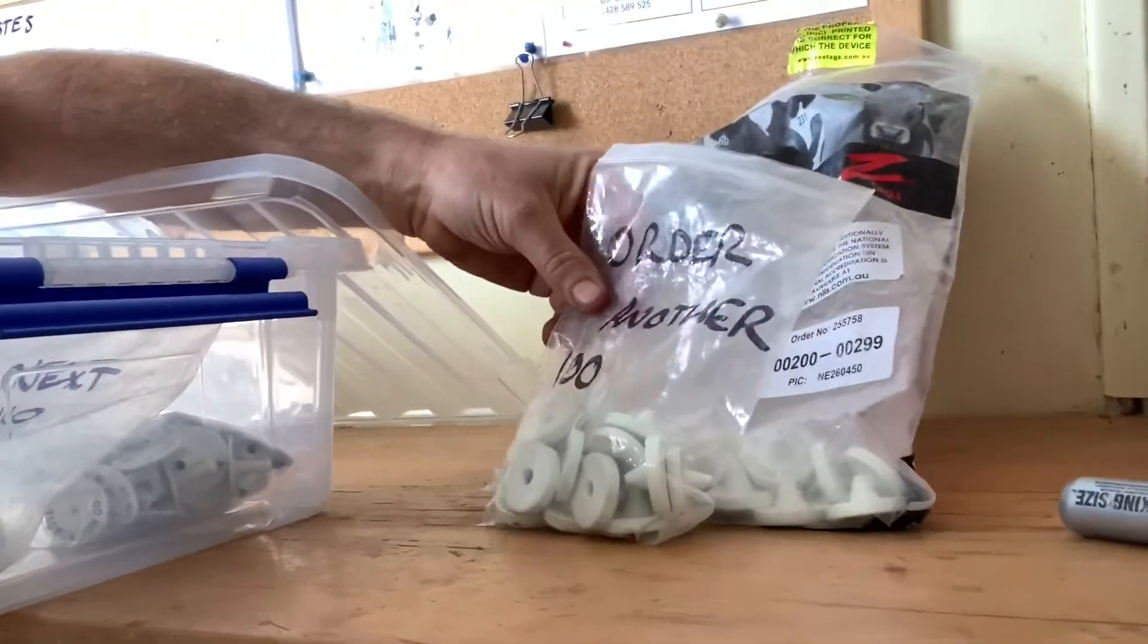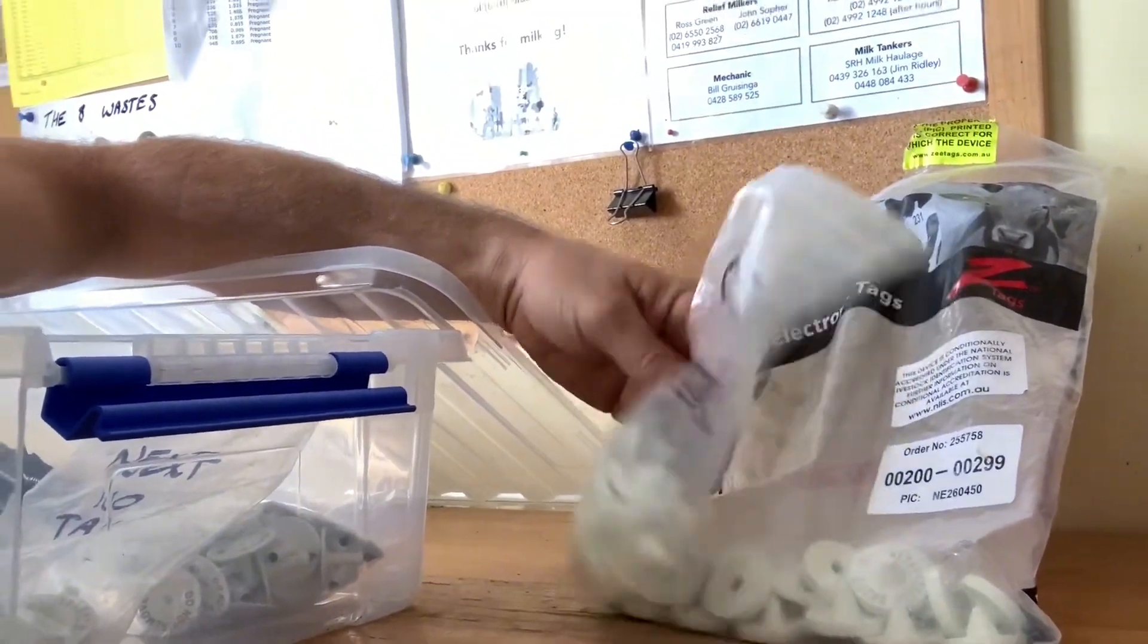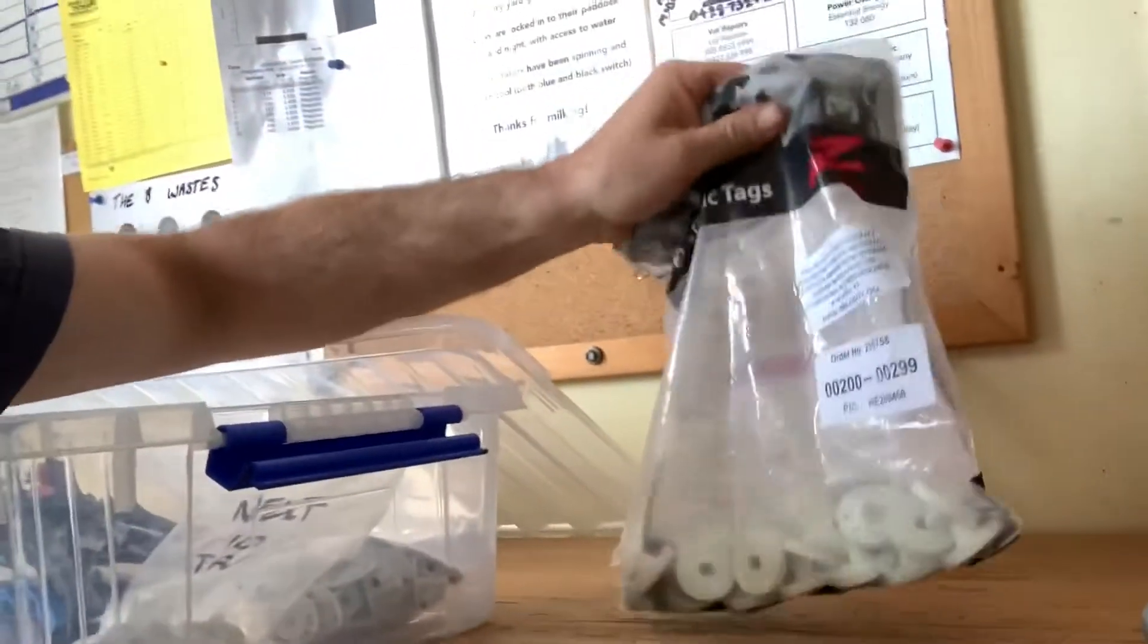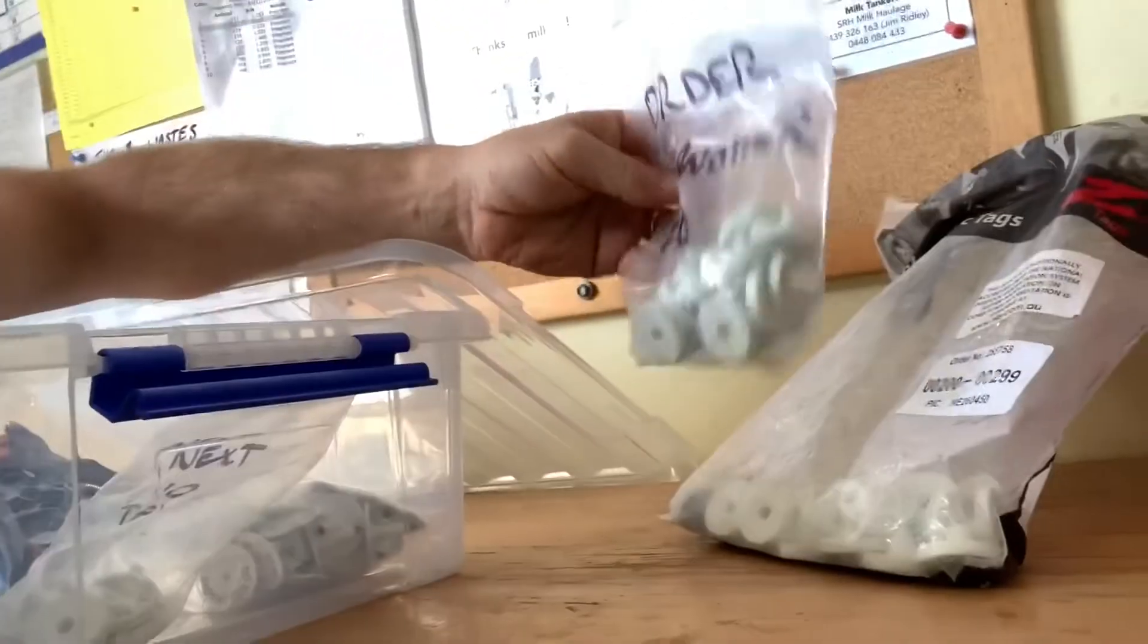bag in there and say 'order another 100.' So we just order 100 at a time—we're not going through that many. But that just means that once we've used through this bag and we get down to the last 10 or 15, they're in a separate bag and it says 'order another 100,' so we go over to our blackboard and we order another 100.